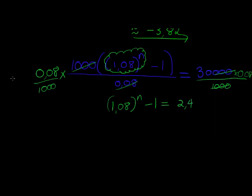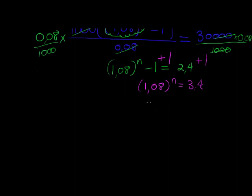Now all we need to do is get rid of the negative 1, so we're going to add it on both sides, and it on this side, add it on that side, so that I have 1 comma 0 8 to the power of n must equal 3 comma 4.